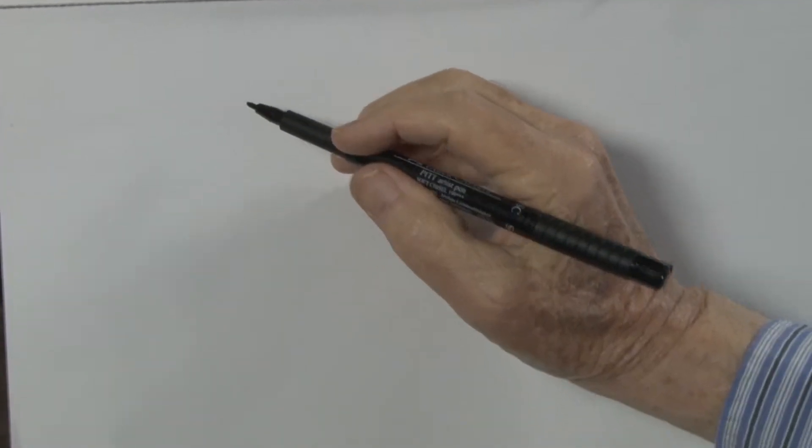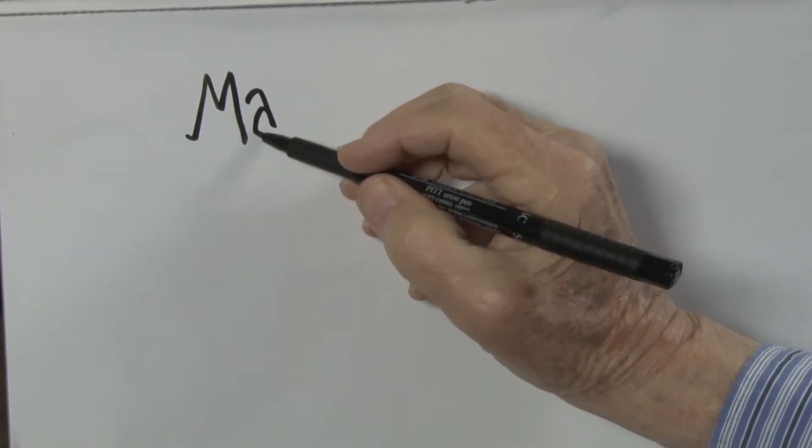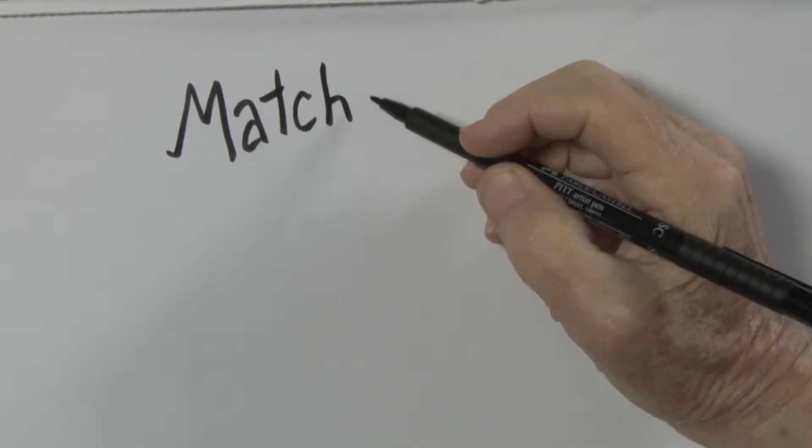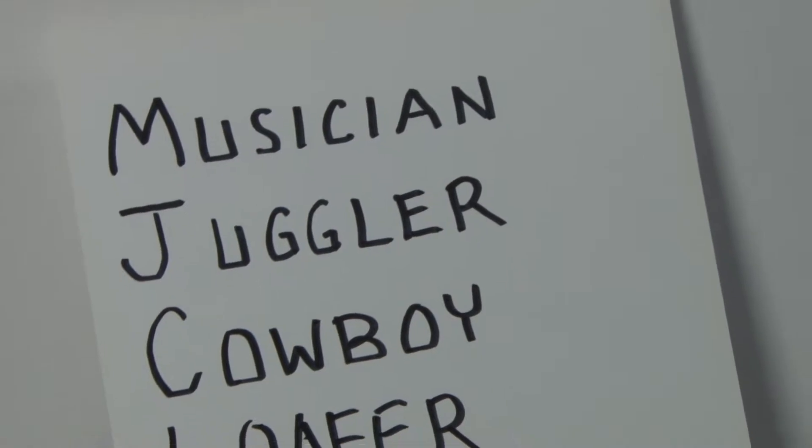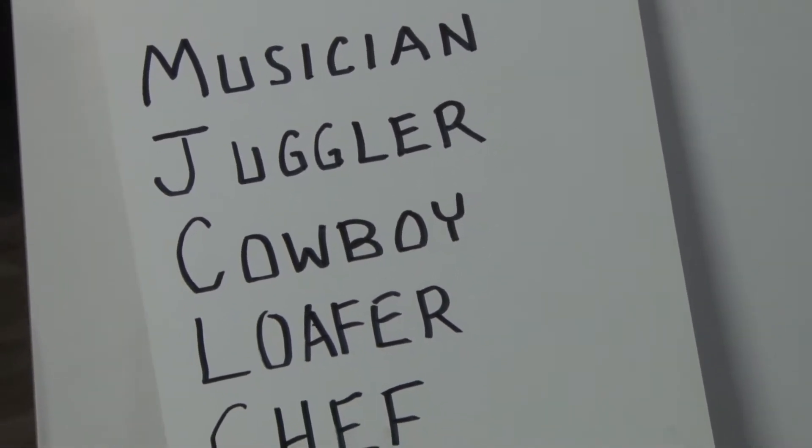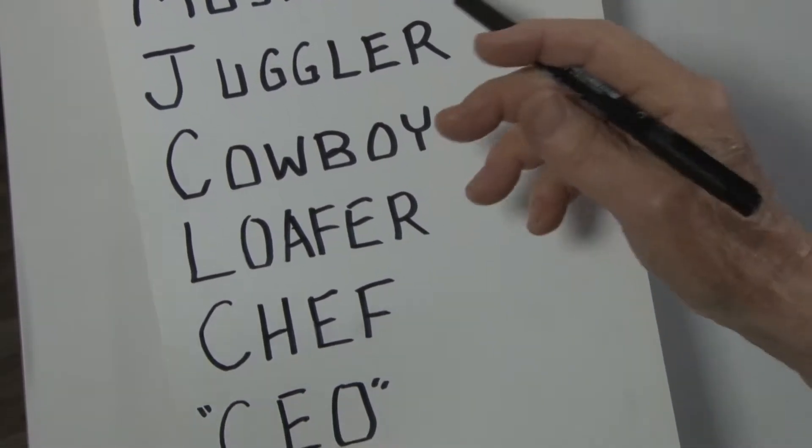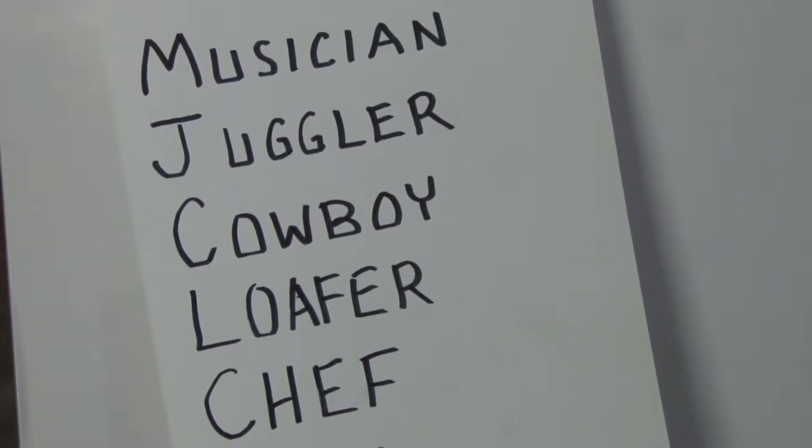Welcome to Mr. Foyer's Easel. On this program we're going to do some more matching. I'm going to be matching some cartoon animals with these different subjects: musician, juggler, cowboy.